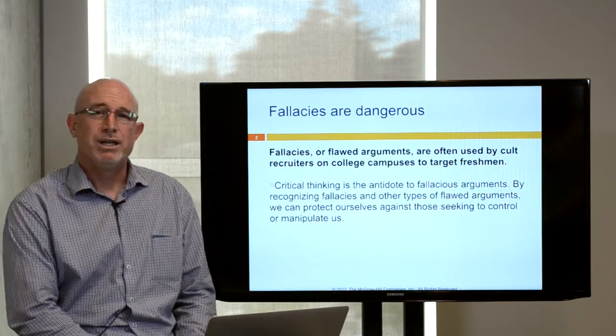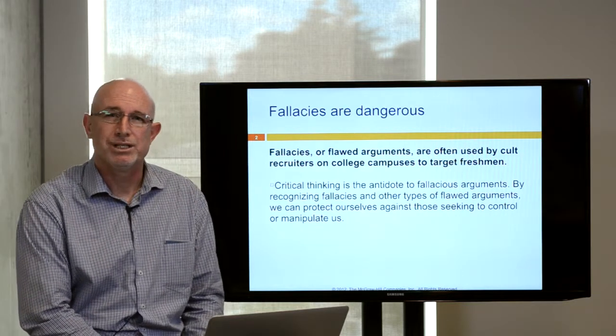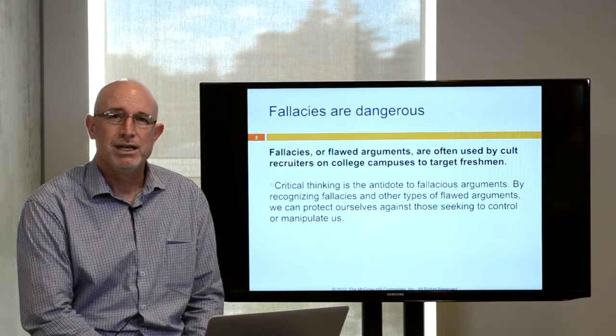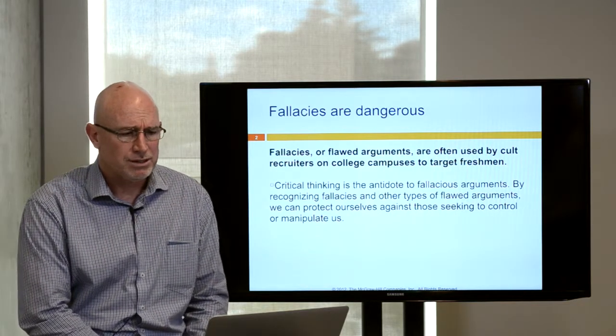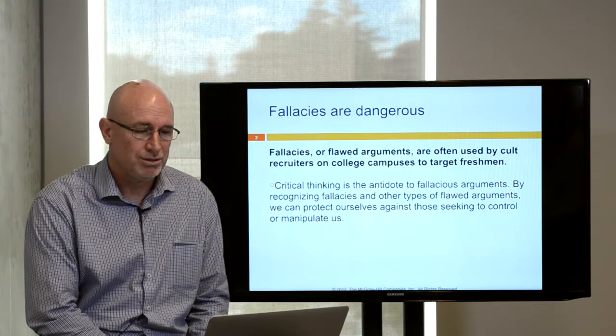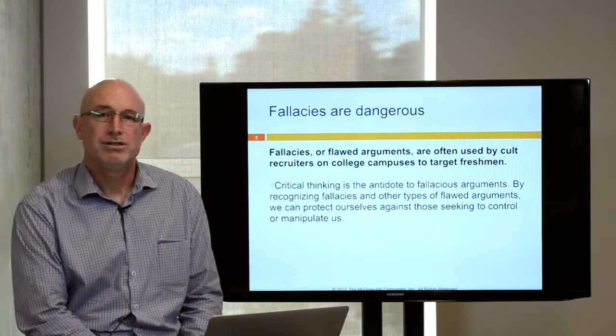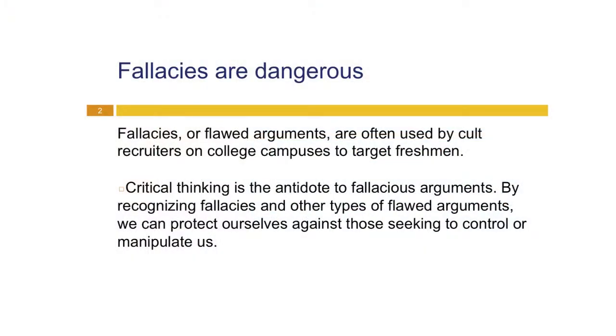Fallacies are dangerous. One of the key dimensions of critical thinking is that it enables us to identify a fallacy, and then to respond to that fallacy with accurate thinking. Fallacies, or flawed arguments, are often used by cult leaders on college campuses to recruit and target freshmen. Critical thinking is the antidote to fallacious arguments. By recognizing fallacies and other types of flawed arguments, we can protect ourselves against those who are seeking to control or manipulate us. This occurs in politics, in advertising, through cult leaders, and in many other ways.